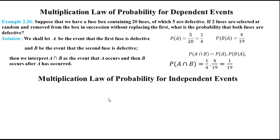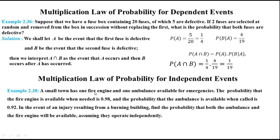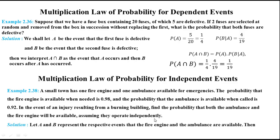Consider another example for independent events. A small town has one fire engine and one ambulance. The probability the fire engine is available when needed is 0.98 and the probability the ambulance is available when called is 0.92. Find the probability that both are available in the event of an injury from a burning building, assuming they operate independently. Let A and B represent the events that the fire engine and ambulance are available. Then P(A∩B) = P(A) · P(B) = 0.98 × 0.92 = 0.9016.